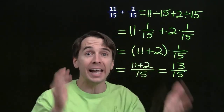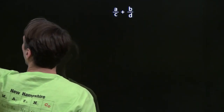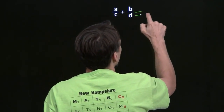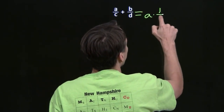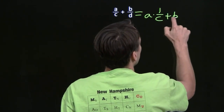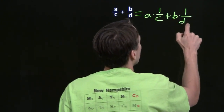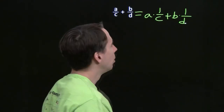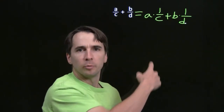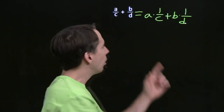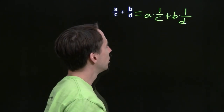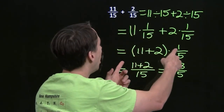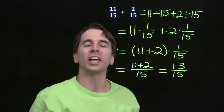Maybe we can do that to add any two fractions. Let's try that out. Our first step was to try the distributive property. We'll write this as a times 1 over c plus b times 1 over d — uh oh. I can't use the distributive property here. I can't factor anything out.